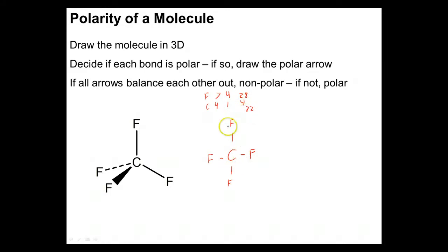Counting the electrons: 2, 4, 6, 8, 10, 12, 14, 16, 18, 20, 22, 24, 26, 28, 30, and 32.